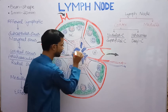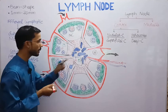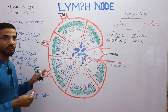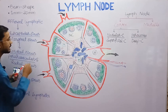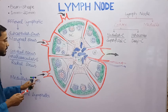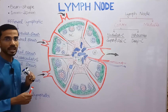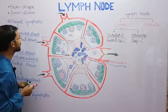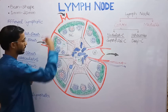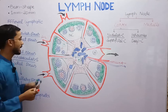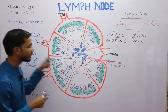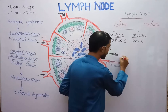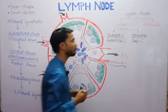M stands for medulla and hilum. Different lymph vessels are present — here you can see the lymph vessels through which lymph enters into the lymph node. These are the afferent lymphatic vessels, and lymph exits the lymph node through efferent lymphatic vessels.